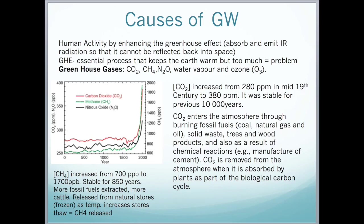The greenhouse gases we need to be aware of are carbon dioxide, methane, nitrous oxide, water vapour, and ozone. I have a graph showing the concentrations of various greenhouse gases over time. The black line represents nitrous oxide, green represents methane, and carbon dioxide is also shown. The concentration of CO2 has increased from 280 parts per million in the 19th century to 380 parts per million. In the previous 10,000 years the concentration was relatively stable, but after the Industrial Revolution there is a very steep increase in carbon dioxide, methane, and nitrous oxide.